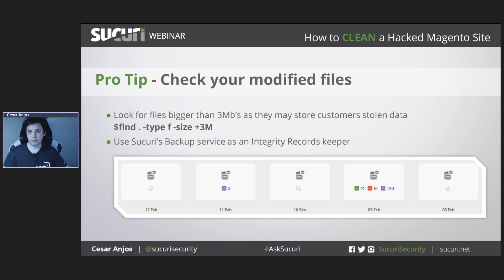At Sucuri, we have a backup service that takes backups of your website every day. With each backup done, you receive an email telling you how many files were added, how many were removed, and how many were modified. This works great as an integrity records keeper, as you can also see which exact files were affected. It makes a very good and cheap integrity monitoring solution, as well as providing secure backups stored away from your server, keeping them safe from any infection. This is an add-on service we provide outside of our normal plans.